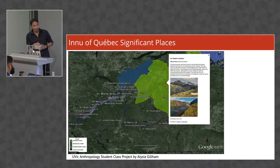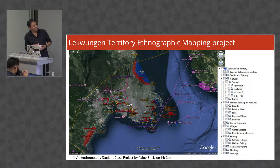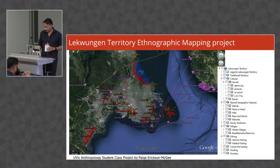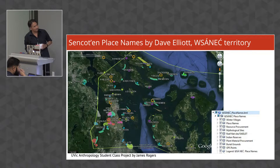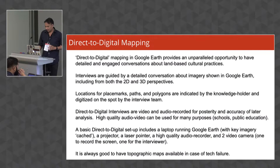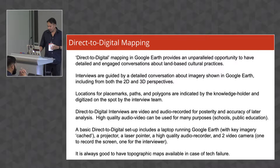We're going to do that today — add all these features to the map. The La Quangin Territory Ethnographic Mapping Project has place names and a whole folder storage of information in Google Earth where you can click features on and off. The Sintjoth Place Names by Dave Elliott are all organized with folders. Direct-to-Digital Mapping using Google Earth provides an unparalleled opportunity to get really detailed information of the Earth to capture precise and accurate information.